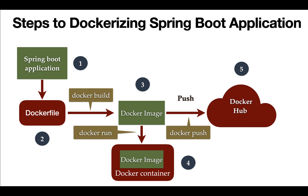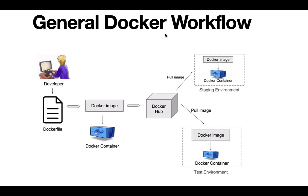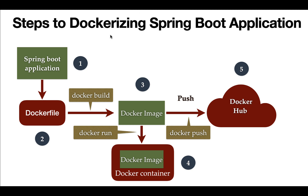Hi everyone, welcome back. In the previous lecture we saw the general Docker workflow. In this lecture onwards we'll start dockerizing a Spring Boot application. Here are the development steps: first, create a Spring Boot application and build some REST APIs; second, create a Dockerfile to build the Docker image; third, build the Docker image from the Dockerfile; fourth, run the Docker image in a container; and fifth, push the Docker image to Docker Hub.